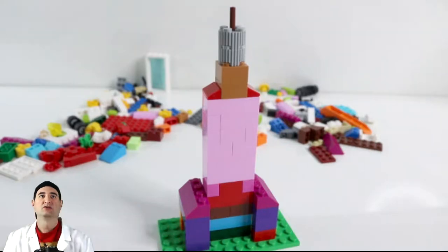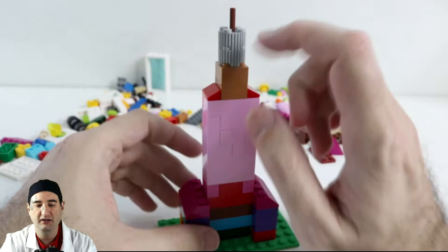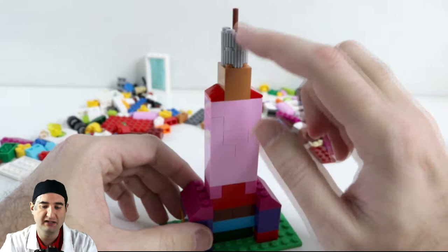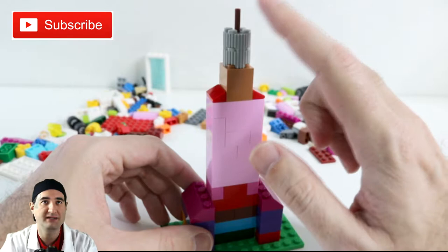So this is the Empire State Building and when the New Year's goes off and the ball is dropping at Times Square, the Empire State Building actually has a whole bunch of colors that they put on the top tier of the tower itself and the Empire State Building looks fantastic.